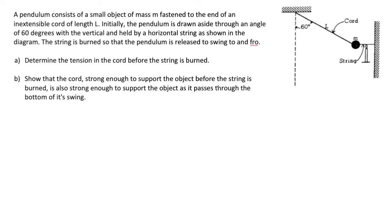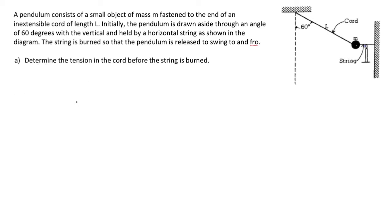Determine the tension in the cord before the string is burned, and show — an interesting term to see on your AP exam — that the cord strong enough to support the object before the string is burned is also strong enough to support the object as it passes through the bottom of its swing. Starting with the slightly easier part A, we're going to determine the tension in the cord before the string is burned using our standard dynamics procedure, which starts with drawing a free-body diagram and considering the sum of forces in an axis of choice.